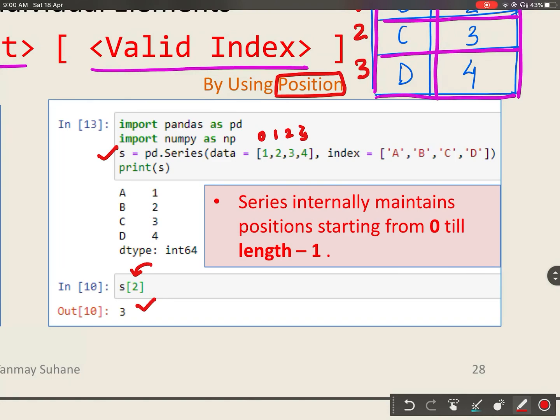...in the case if a Series has more than one index with the same value. Consider this example: if I have a Series with 4 data and 4 data labels, you can see here I have 2 data with the same data label A. If you want to access a particular data out of these two, you can access it by using positions.